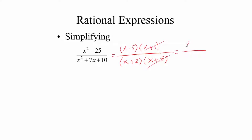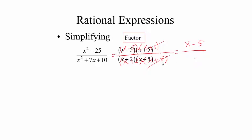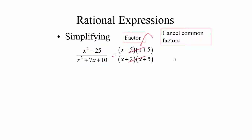The x plus 5 in the denominator and the x plus 5 in the numerator cancel. Therefore the final answer is x minus 5 divided by x plus 2. I can do this cancellation because these are multiplications — if it were plus or minus, I could not do that. The slide confirms: x minus 5 times x plus 5 over x plus 2 times x plus 5, cancel the common factor, and the answer is x minus 5 divided by x plus 2.